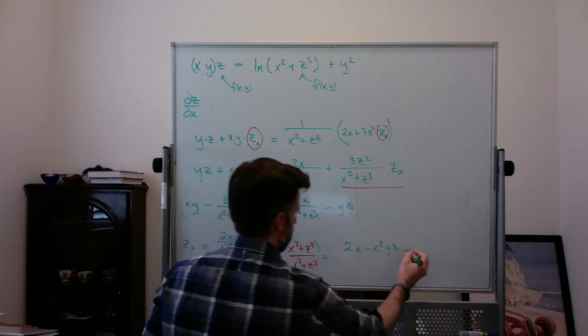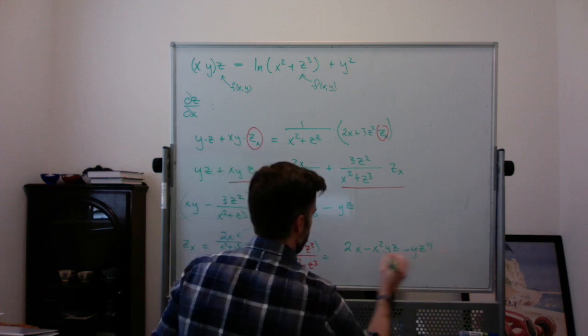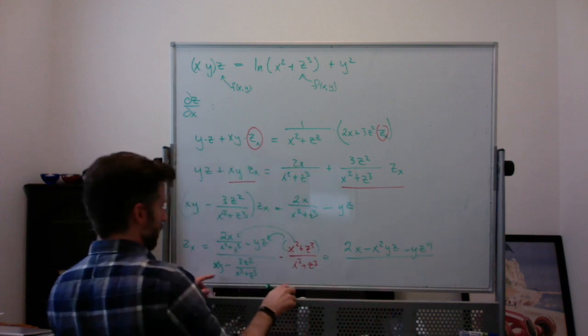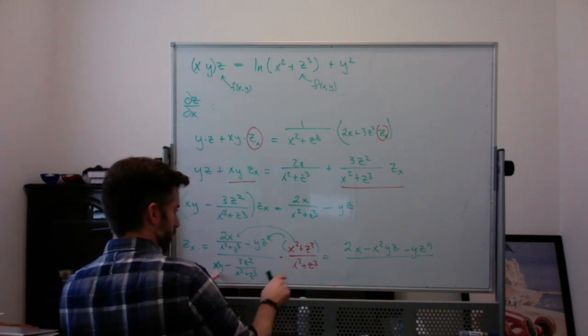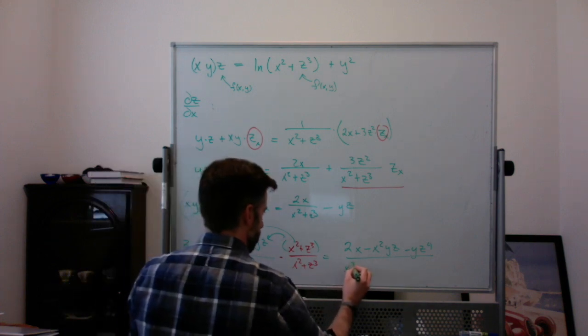Minus yz times z³ is minus yz⁴. Over same kind of deal on the bottom. This times this is going to be xy times x² is x³y.